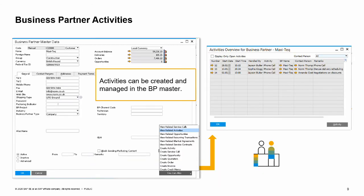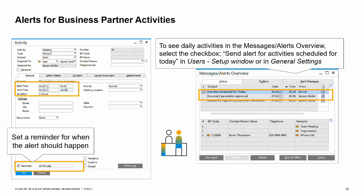Activities can also be created and managed inside the Business Partner Master data record. From the Business Partner Master, you can open a list of related activities as shown in the graphics, or choose the option to create activities. When you create an activity from within the Business Partner Master record, the business partner information defaults into the activity. When you set up an activity in the Business Partner Master data, SAP Business One has functionality that allows you to set an alert to be sent to the user for a specific type of activity — phone call, meeting, note, or other. You can also set a reminder and a time frame for when the alert should happen.